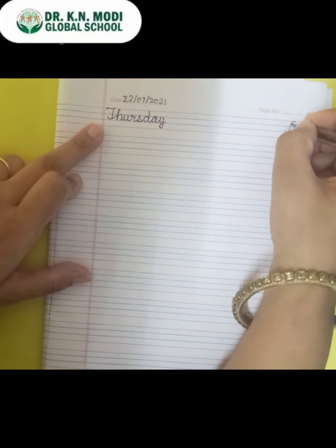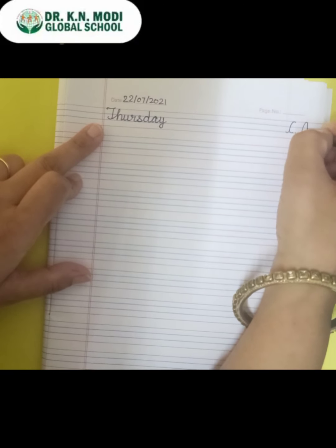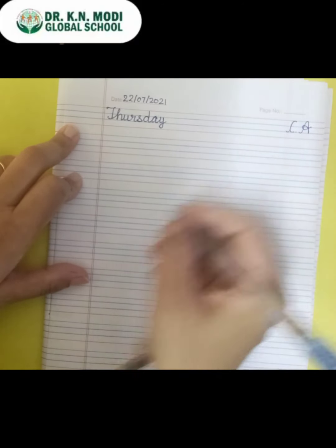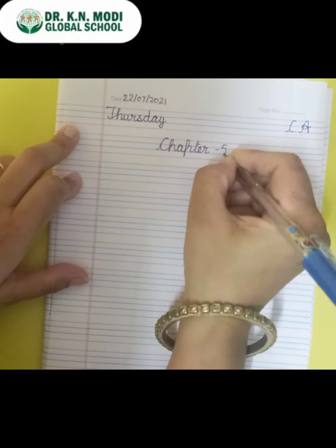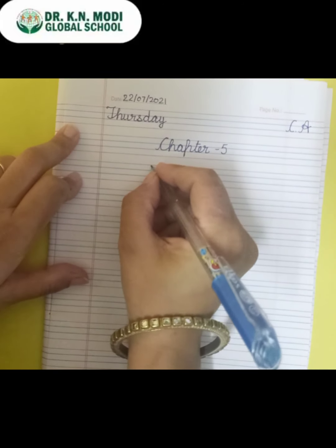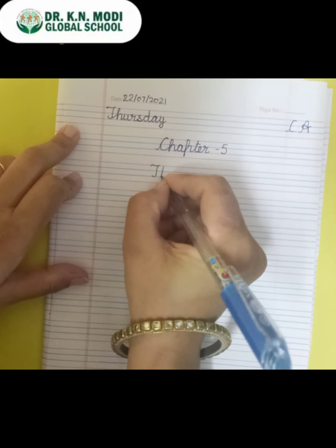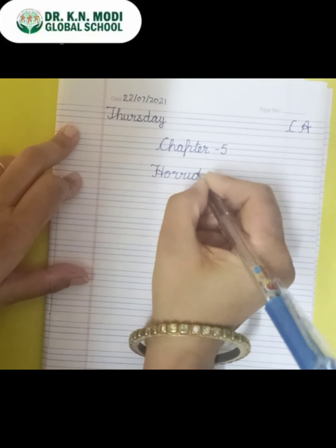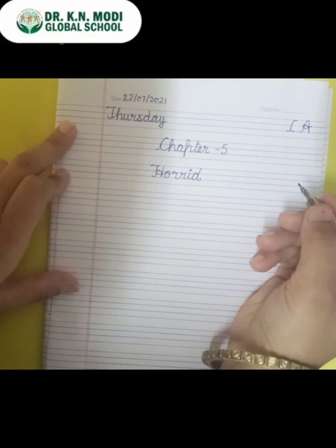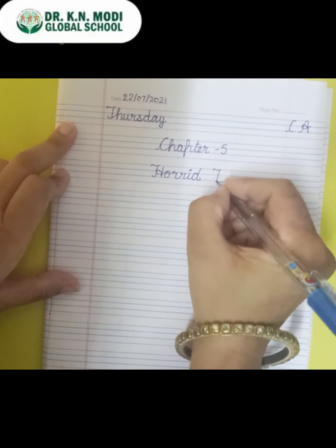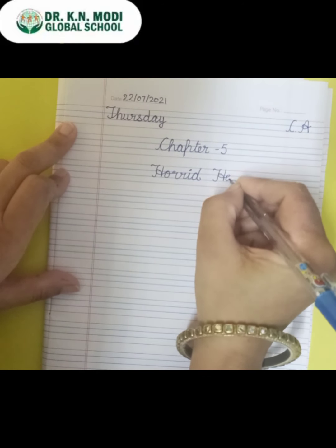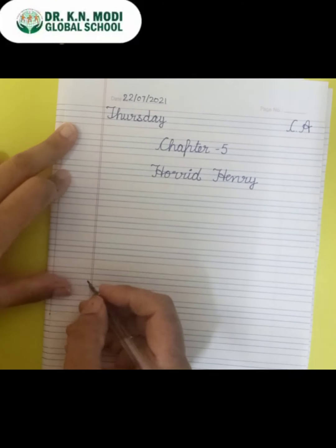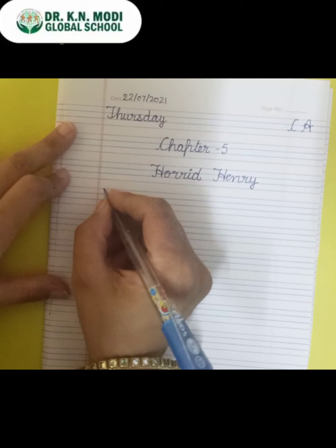Mention CA — it means this is your class work, so you have to complete it now. Write down this is your Chapter 5 and the name of this chapter is Horrid. What is the spelling of horrid? H-O-double R-I-D. Horrid Henry.